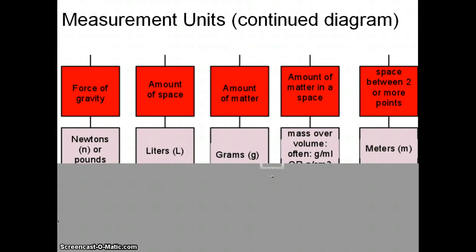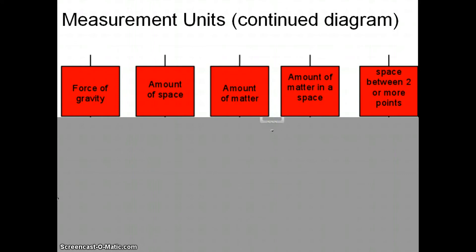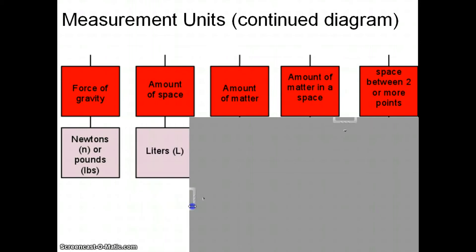Next. The measurement units with each one. So, this is a continuation of the diagram. Weight. The measurement unit will be newtons or pounds. Volume. The measurement unit in metric is liters. You may have seen, like, a two-liter bottle of soda. Hopefully, you didn't drink it all by yourself, but you've seen them.